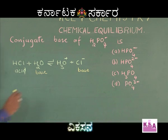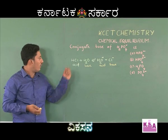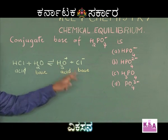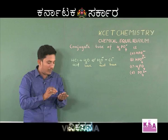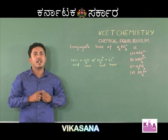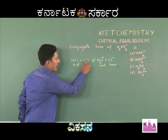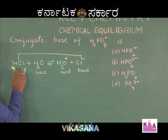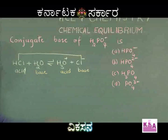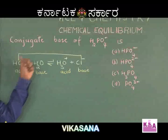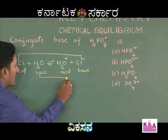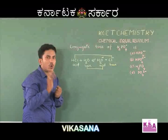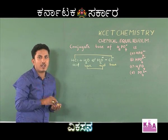H₃O⁺ is an acid in the backward reaction. So in the forward reaction HCl is an acid and H₂O is a base; in the backward reaction Cl⁻ is a base and H₃O⁺ is an acid. A conjugate acid-base pair is a pair of acid and base which differ by a proton. For example, HCl is an acid and Cl⁻ is a base — they differ by one proton, hence HCl and Cl⁻ are called a conjugate acid-base pair. Cl⁻ is the conjugate base of HCl, and HCl is the conjugate acid of Cl⁻. Similarly, H₂O and H₃O⁺ are a conjugate acid-base pair.